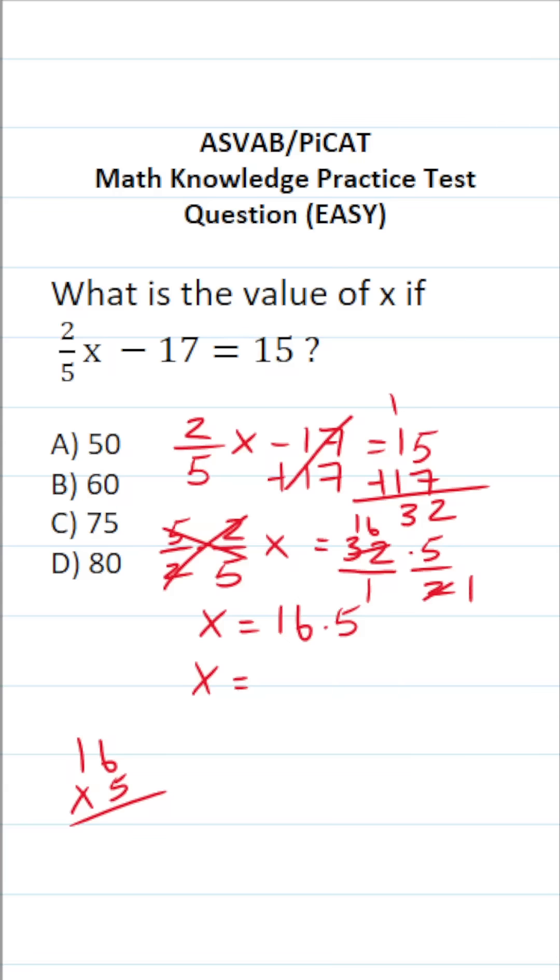So I'm going to work out 16 times 5 off to the side. 6 times 5 is going to be 30. Bring down a 0, carry a 3. 1 times 5 is 5, plus 3 is 8. So this one is 80. So the answer is D.